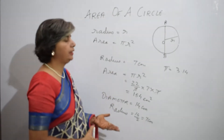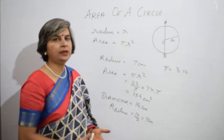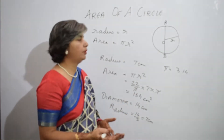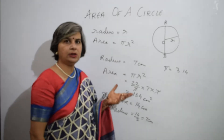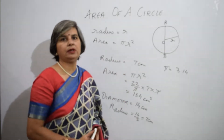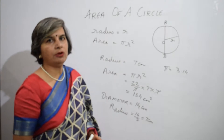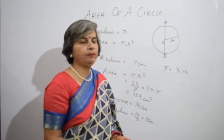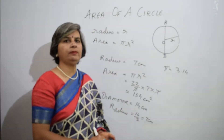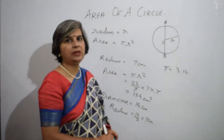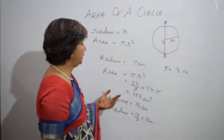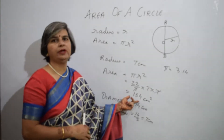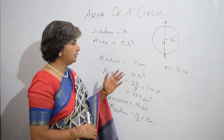Now when I have found the radius I can use the formula again to find the area of a circle. This formula can be used in all questions where we are supposed to find the area of a circle — maybe the area of a wheel or any circular object where the radius is given. To make the question more complicated, it can be asked in the opposite sense.